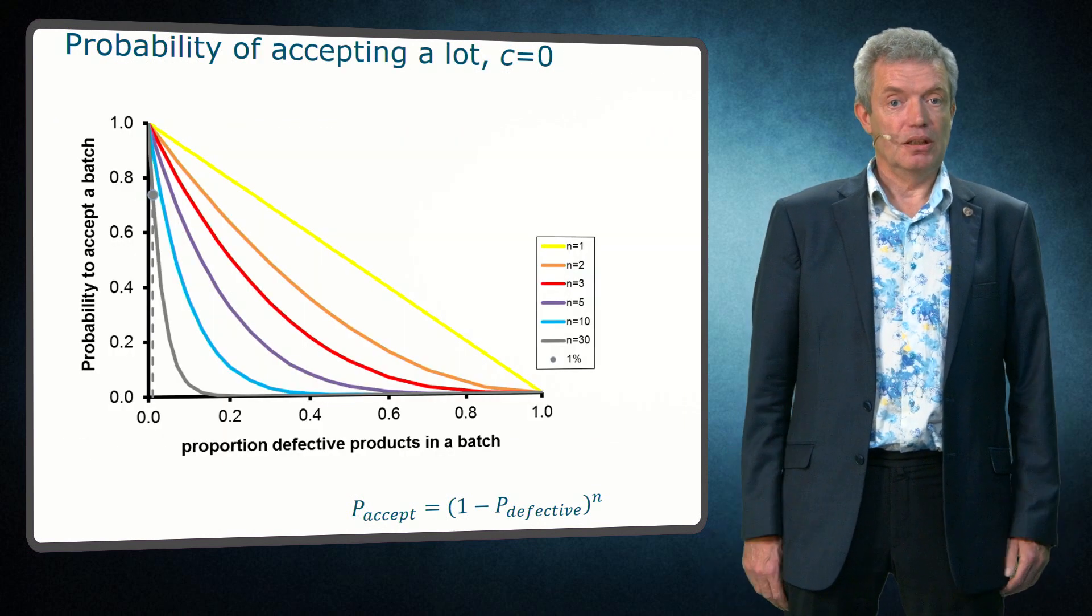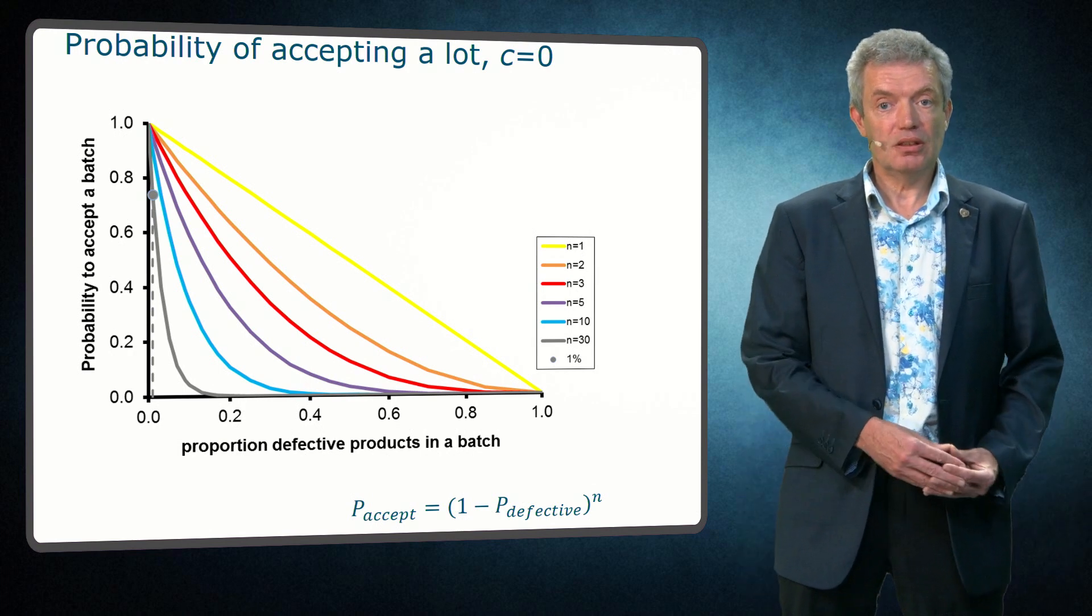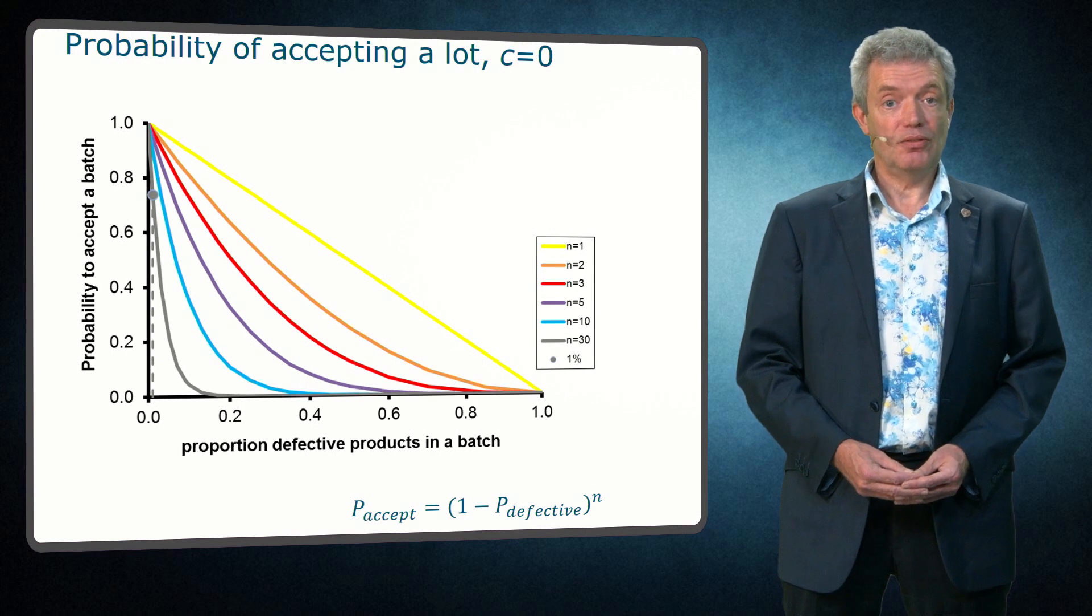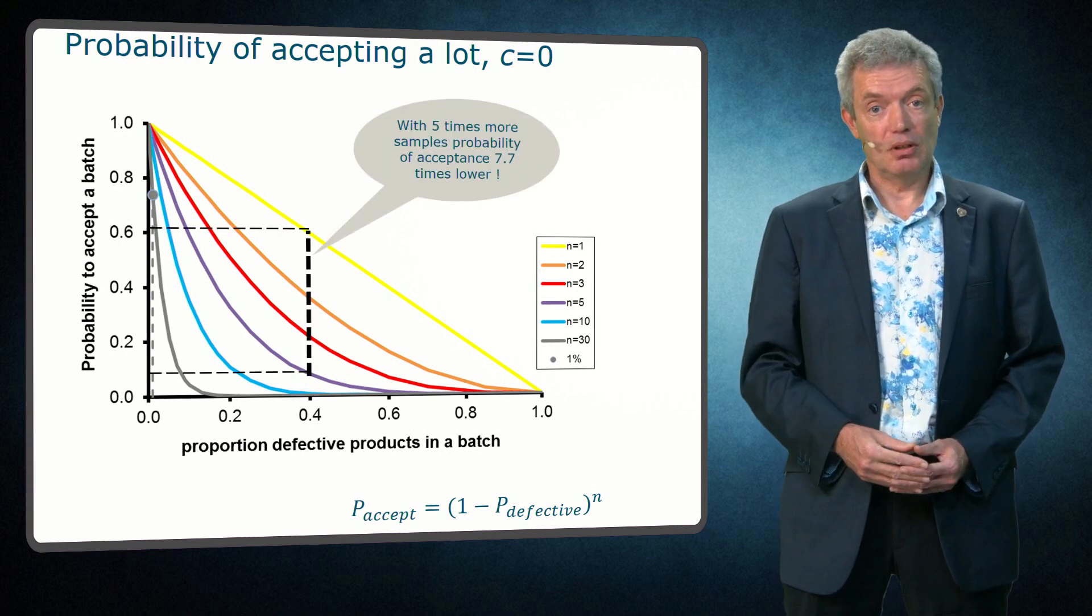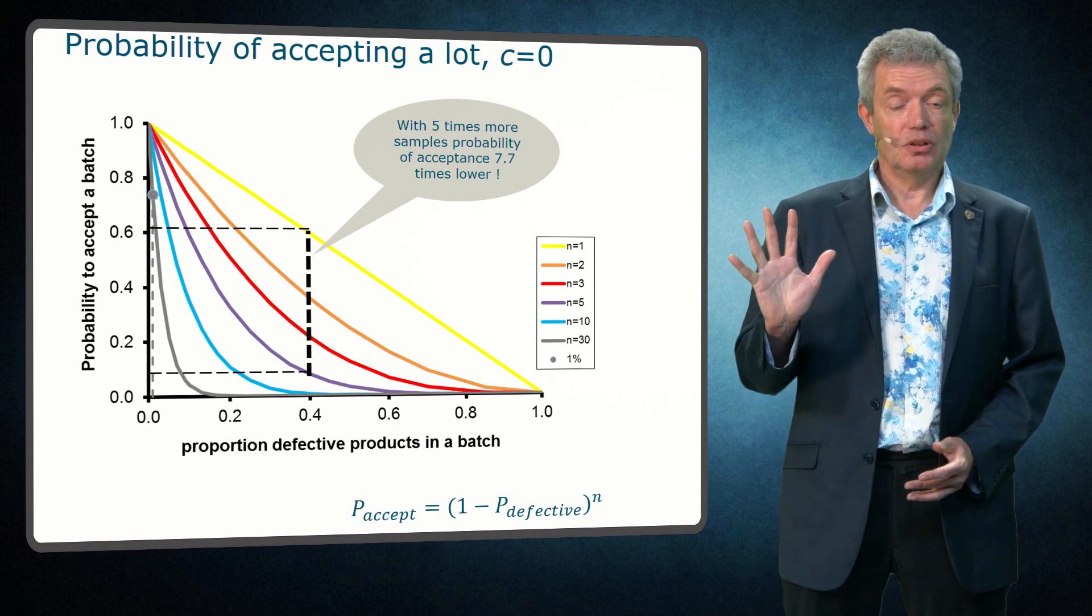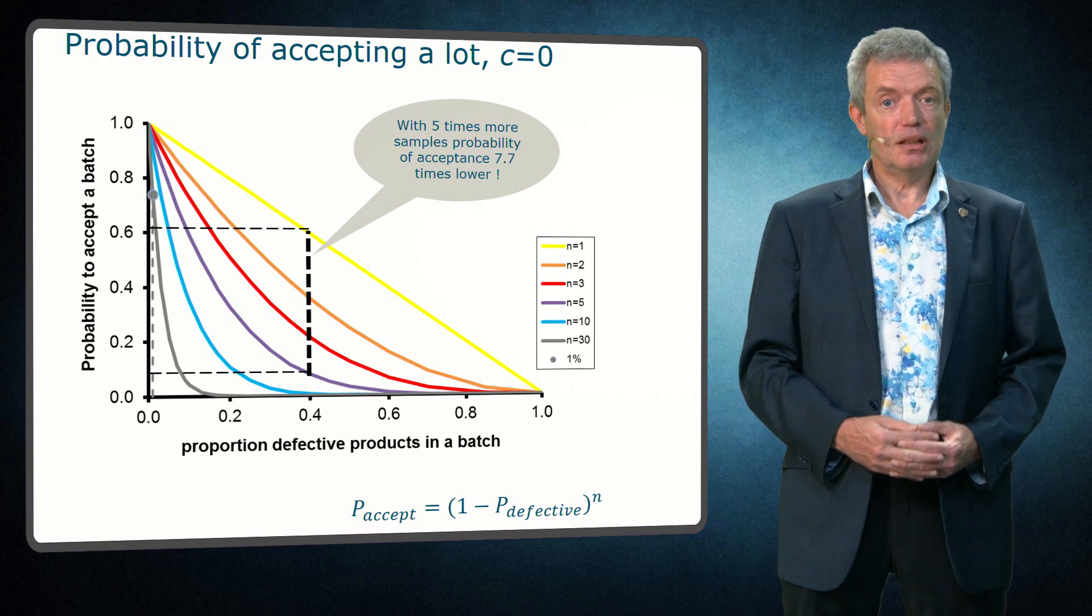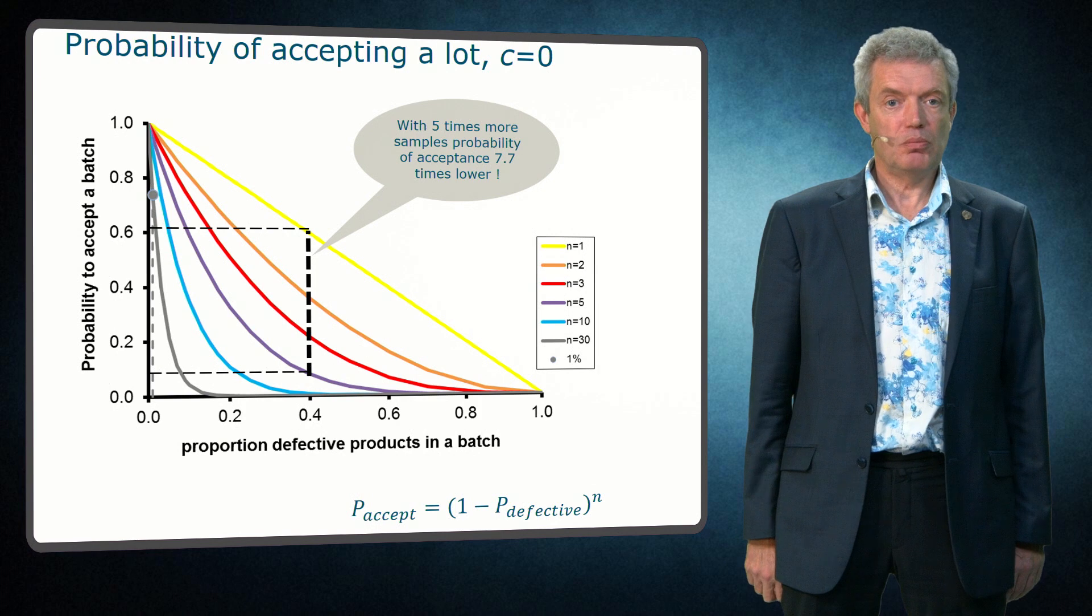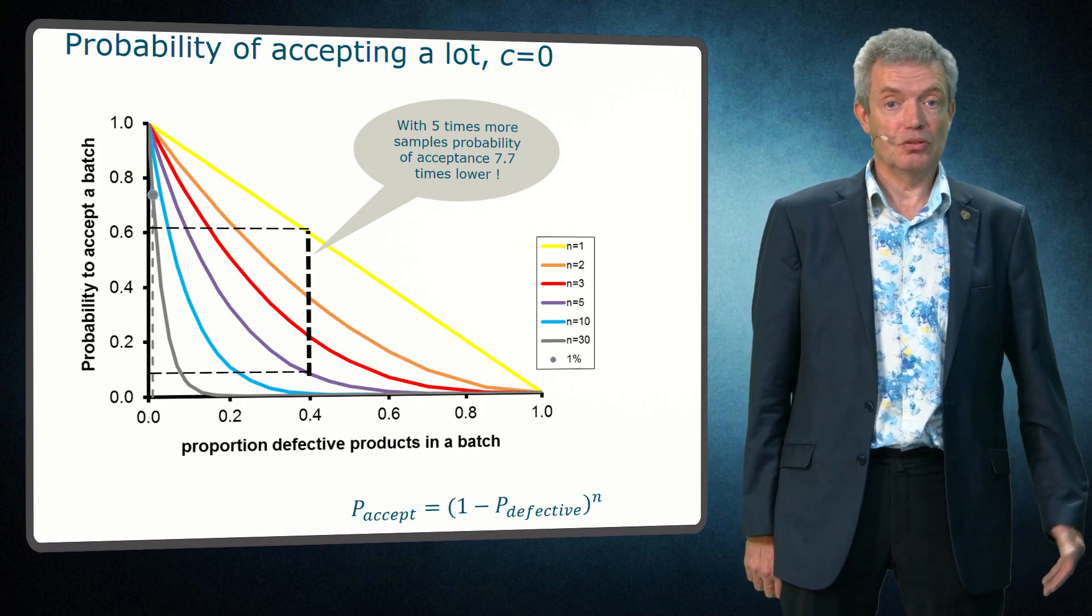You can also describe this table in graphs, and you can see here the probability of accepting a lot at various defective rates and for various numbers of samples. If you have a certain defective rate and you take only one sample, the yellow line, or you take 5 samples, the violet line, or 30 samples, the grey line, your acceptance rate largely goes down. In this case 5 times more samples give a factor 7.7 lower acceptance rate. And this also shows a misconception.